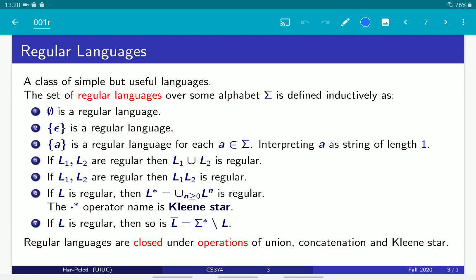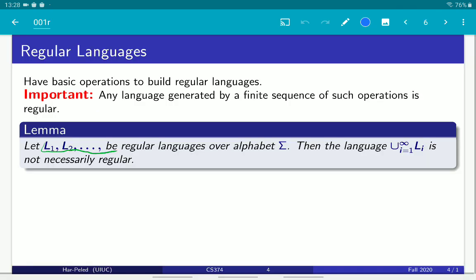Those languages are closed under union, concatenation, Kleene star, complement, and other operations that we will see later on. It's important to emphasize here that I allow you only to do this union operation or concatenation a finite number of times.